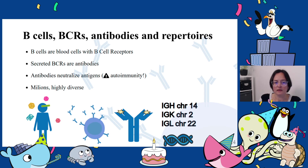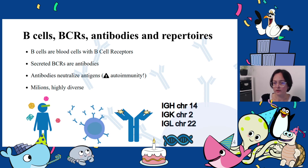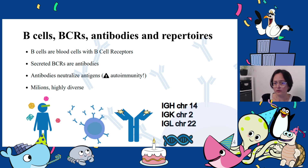B cells, BCRs, antibodies, and repertoires. We are constantly exposed to a diversity of potential threats — bacteria, viruses, toxins — and the role of the immune system is to keep us safe. B cells are central players in adaptive immunity because they are able to bind to antigens, the potential threats, and once bound, proliferate and produce more B cells that bind even better. The activity of B cells depends on the expression of B cell receptors on their surface. These receptors are the ones that bind to antigens. In their secreted form, when they are not bound to the B cell surface, they are known as antibodies.